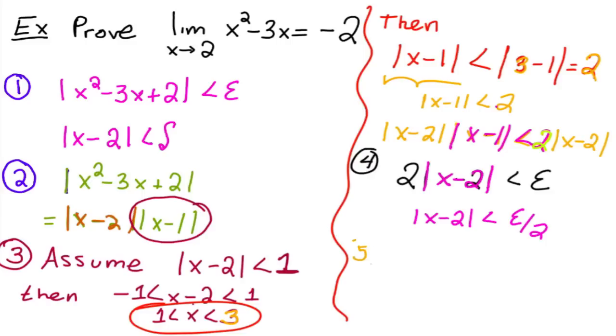Okay, so then you choose, you choose step 5 delta to be equal to that value that you just found.